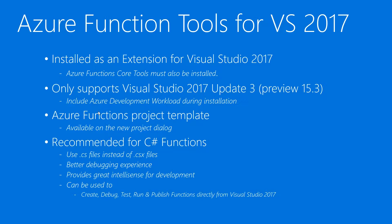After installing the extension, a new project template will be added to Visual Studio. This is the preferred way of developing C# functions. With this new tooling support, it uses C# files instead of C# script that we were using to develop Azure Functions locally, especially in the earlier versions of this tooling support. The C# script files are still supported on the Azure portal, but the development experience now uses C# files instead, which provides a better debugging experience with IntelliSense.